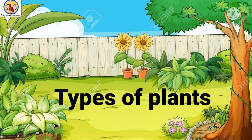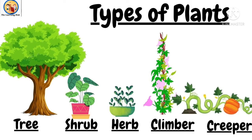Plants are of different types, shapes, and sizes. Plants are living things — they grow everywhere and need water, soil, air, and sunlight to survive and grow. But plants cannot move from place to place. Some plants grow on land, some grow in water, and some grow in hilly areas and desert areas as well. So there are basically five types of plants: trees, shrubs, herbs, climbers, and creepers.